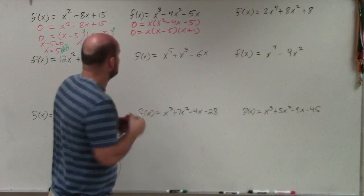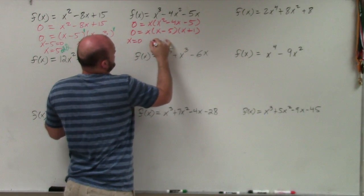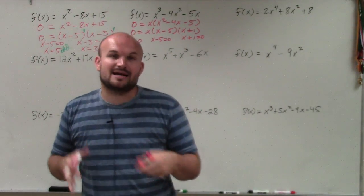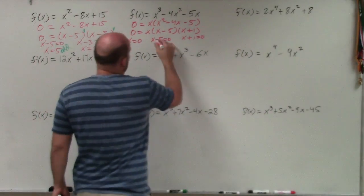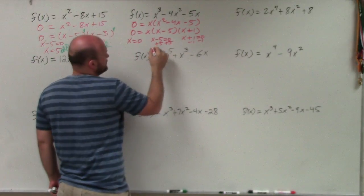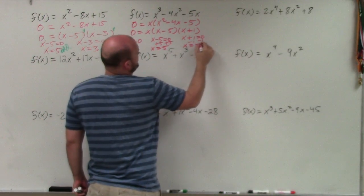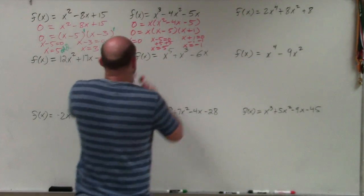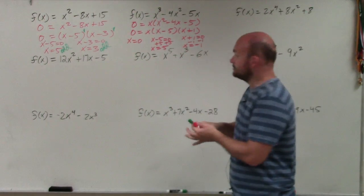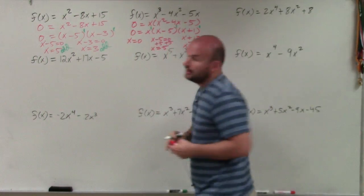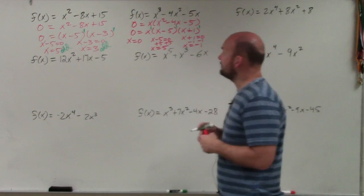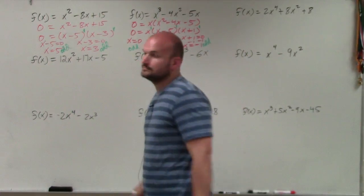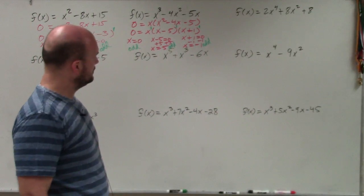Now I set each of my factors equal to 0 using the zero product property: x equals 0, x minus 5 equals 0, and x plus 1 equals 0. Solving gives us x equals 0, x equals 5, and x equals negative 1. Going back to our linear factors, they all have a power of 1, so since they all have a power of 1, they're all going to be odd multiplicity.